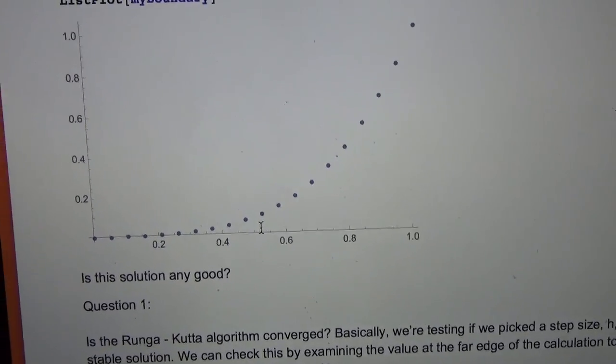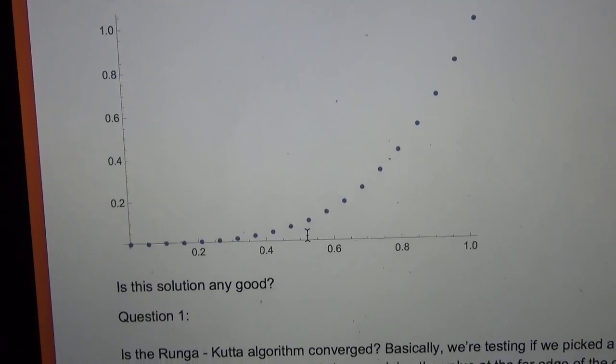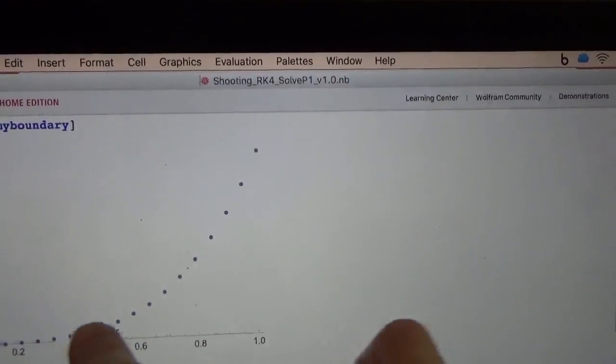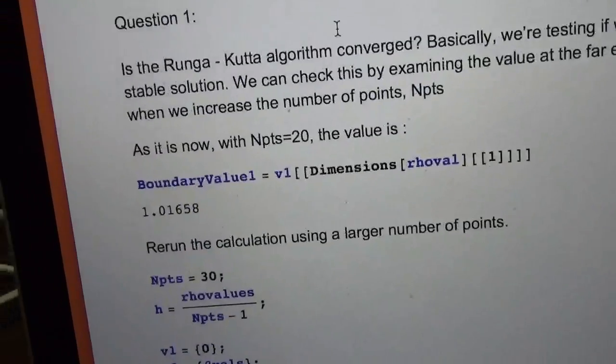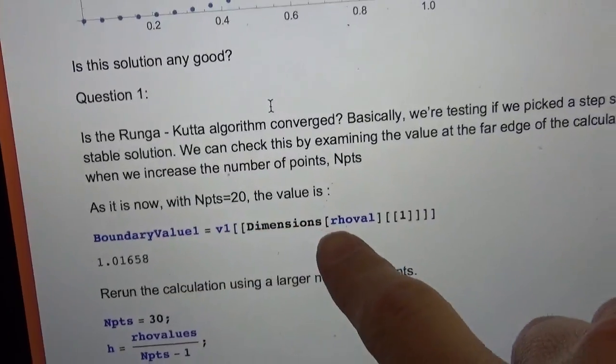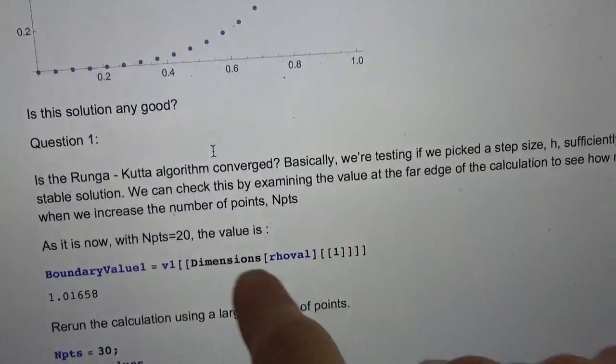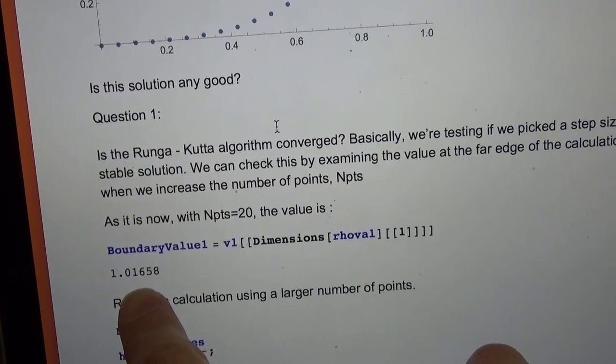Our solution starts out here, and then we solve across from rho going from 0 to 1. This is a time problem, an initial value problem. What we can do is figure out what the solution is here at the end. This should be the most sensitive to changes in the number of steps. At the edge of our problem, that far point, we have the value 1.01658.